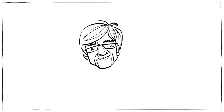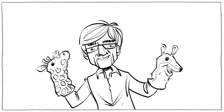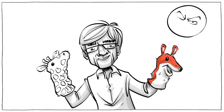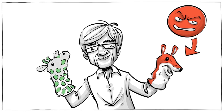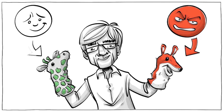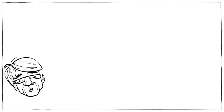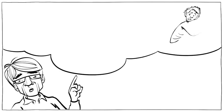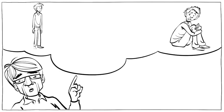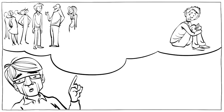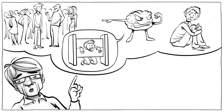Marshall Rosenberg, who developed the model, liked to show the differences between communication styles with two animals. The jackal was a symbol of aggression, dominance, and violent communication. The giraffe, with his long neck and big heart, represents a clear-sighted and compassionate speaker and non-violent communication style. All violence, Rosenberg wrote, is the result of people tricking themselves into believing that their pain derives from other people and that consequently those people deserve to be punished.